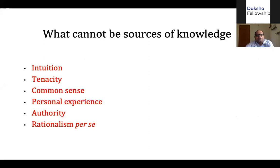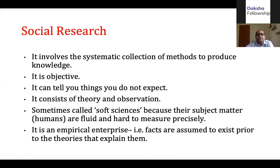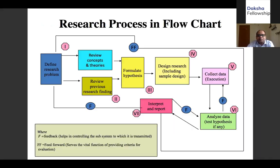Research methodology is not a matter of common sense — in fact, often common sense doesn't sit well with the idea of research methodology. It has to be based on facts and guided by theory. Trying to use your personal life experiences, perpetuate common myths or media myths — that's not what systematic social science research is. Things like your intuition, your tenacity, ideas of common sense, personal experience, that someone important said it, or even just using your logic — none of these are really good sources of knowledge for social science research. Social science research has to be systematic: you systematically collect data, there has to be objectivity in your work. It consists of two parts: theory and observation. Social science is called a soft science because the subject matter — human beings — is a bit fluid and hard to measure with great precision. But importantly, it is an empirical enterprise. We assume that facts exist prior to the theories that explain them.